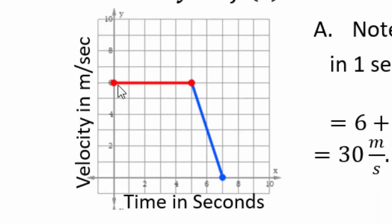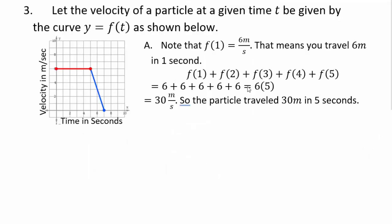Let's take a look at our graph. We have velocity in meters per second and then time in seconds for a particle. So note our first f(1). f(1) is 6 meters per second. That means that you're traveling 6 meters in one second. And you can do that for f(2). So go to 2 and up. That's also 6. f(3) is also 6. 4 is 6. And 5 is 6. So it'll be 6 plus 6 plus 6 all the way to f(5), which is also 6. So it's 6 times 5 or 30 meters per second, which means that the particle traveled 30 meters in 5 seconds.